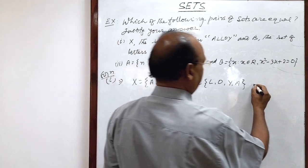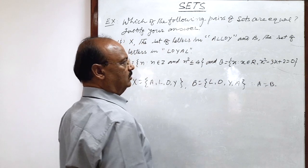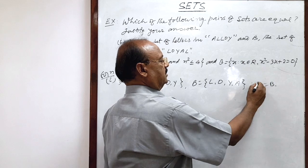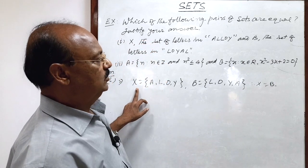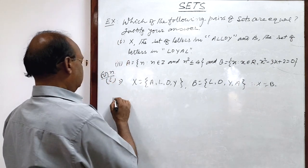So we find here X is equal to B. So answer is yes, these two sets X and B are equal, understood. And we will see now the second part here.